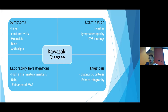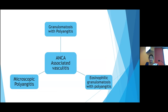When it comes to the lungs, it is small vessel vasculitis that predominantly affects them. Within small vessel vasculitis, ANCA-associated vasculitis is the most common group affecting the lungs. There are three main ANCA-associated vasculitides: granulomatosis with polyangiitis (GPA, previously Wegener's granulomatosis), microscopic polyangiitis (MPA), and eosinophilic granulomatosis with polyangiitis (EGPA, previously Churg-Strauss syndrome).